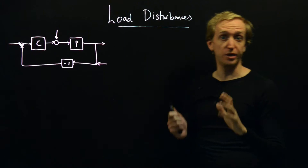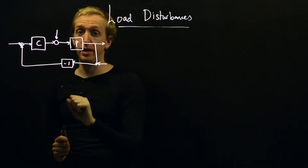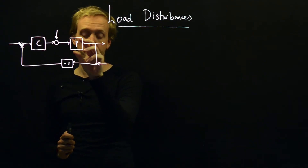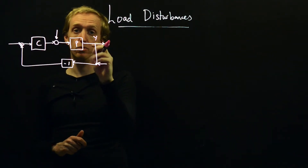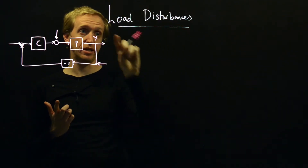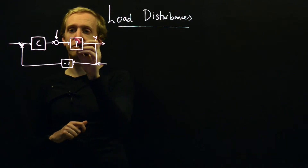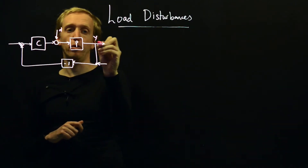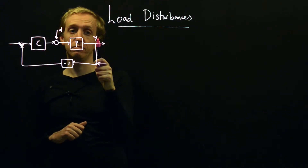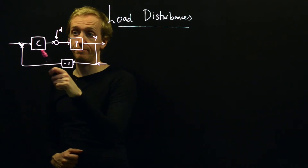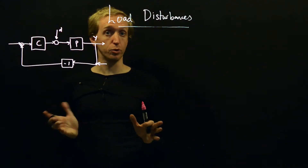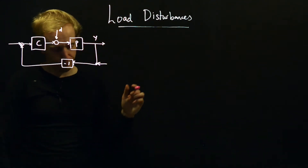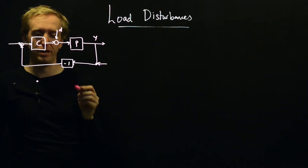Just to remind ourselves of the general framework: we're investigating this feedback loop in which P is the process we're interested in controlling, and Y, the output of our process, is the thing we wish to control. We're talking about load disturbances today — we want to minimize the effect of a load disturbance D on Y, and we're going to do this through the design of our controller or compensator C.